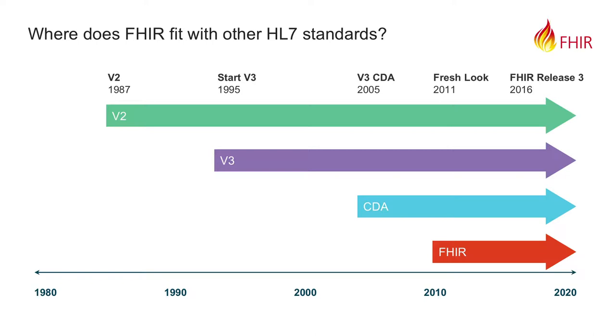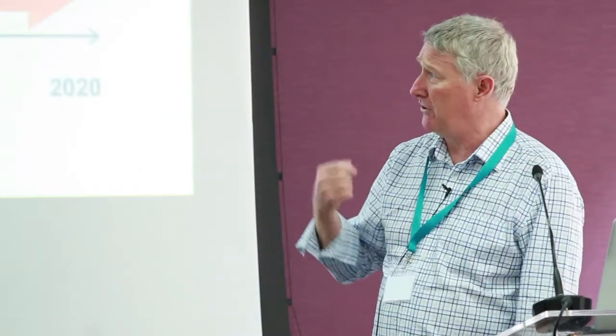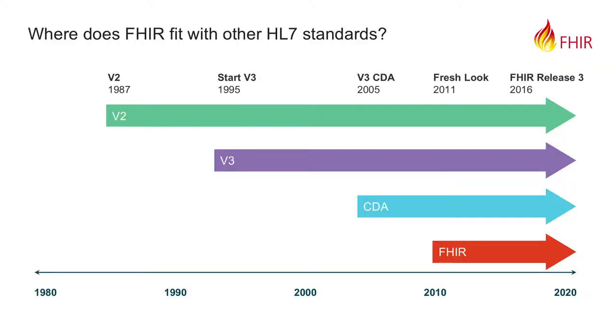I put this slide up to put FHIR in context with the other ways we currently share data. HL7 version 2 is a message-based sharing paradigm — used, for example, when a hospital admits a patient and the admin system wants to tell the LIS system. It's been around since 1997 and is going to be around for a very long time. We do not expect HL7 version 2 to disappear anytime soon.